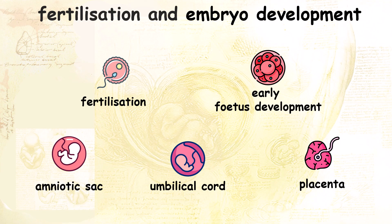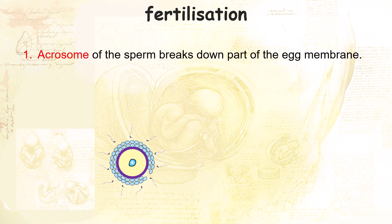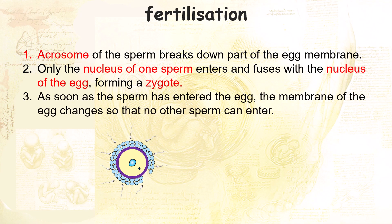If a couple copulate during the wife's fertile period, fertilization can take place. Sperm will travel towards the oviduct, and the lucky ones may encounter the egg. The acrosome, which is an enzyme found at the tip of the head of the sperm, will break down part of the egg membrane. Only the nucleus of one sperm will be able to enter and fuse with the nucleus of the egg, forming a zygote. This is due to the development of a membrane that prevents other sperm from entering.